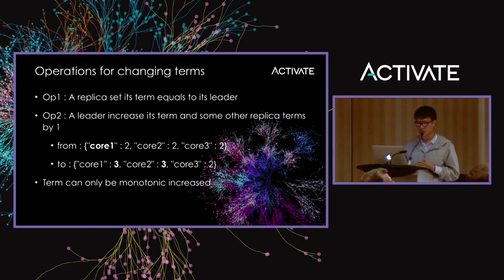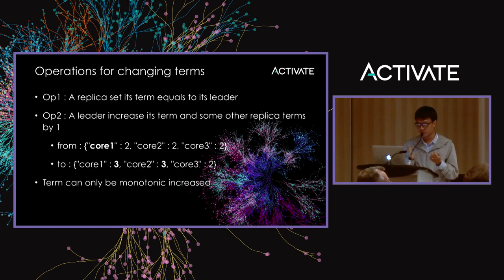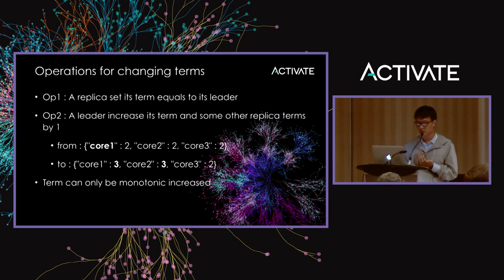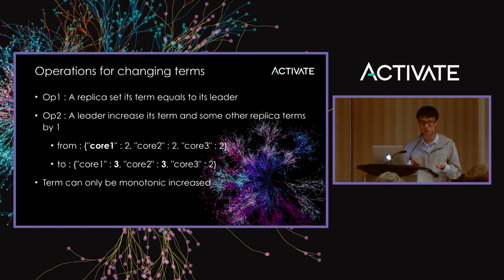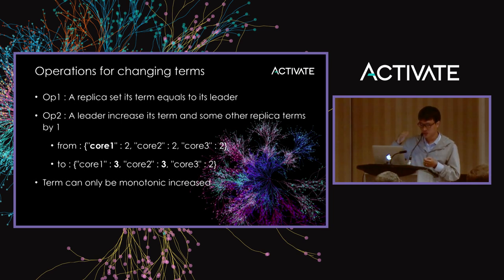The second operation can only be done by the leader: the leader increases its own term and some other replica's term by 1. For example, if core1 is the leader, it can increase its term and core2's term from 2 to 3. From these two operations we can be sure that term values can only monotonically increase — they cannot decrease, they cannot be negative, they can only go up.